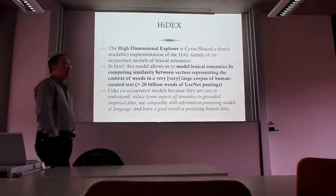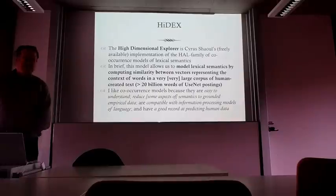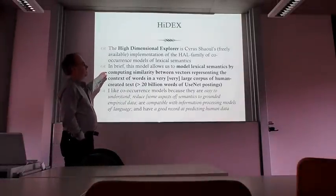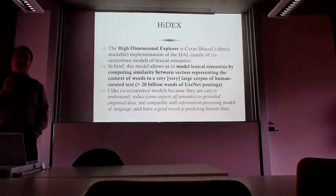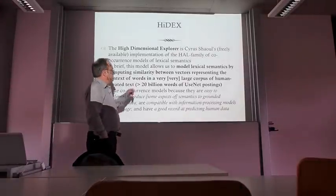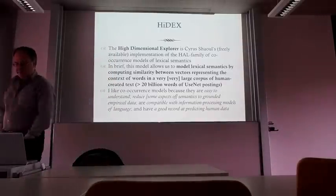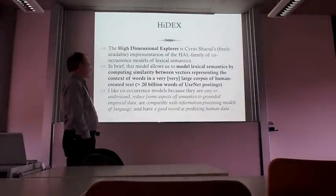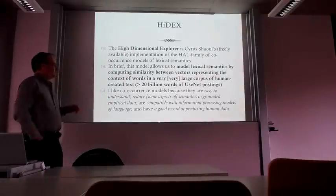The basic idea of the co-occurrence model is that it tries to compute a model of lexical semantics by computing similarity between vectors that represent the context of words—the context in which words occurred in a very large corpus of text. We're up to using a 20-million-word corpus. Within that corpus, we can count how often words occur beside each other, compare those counts, and get some semantic-like features.